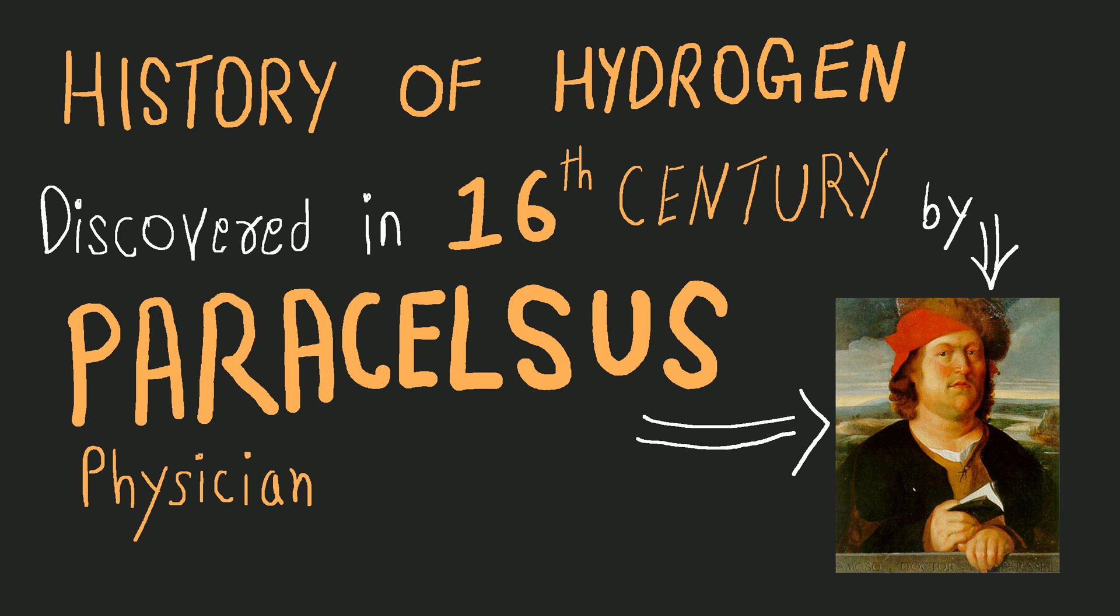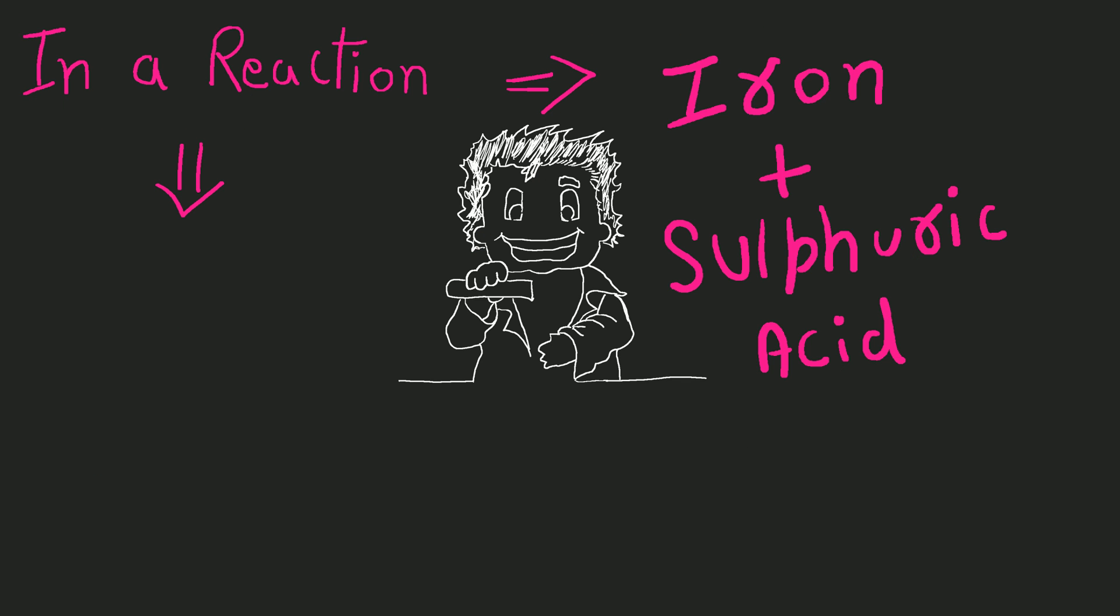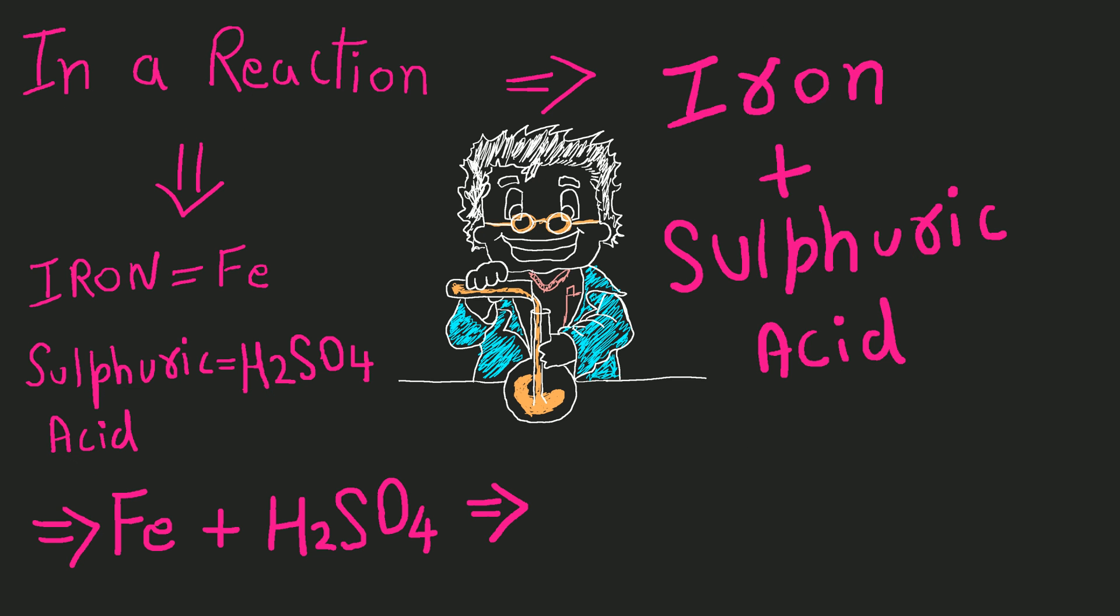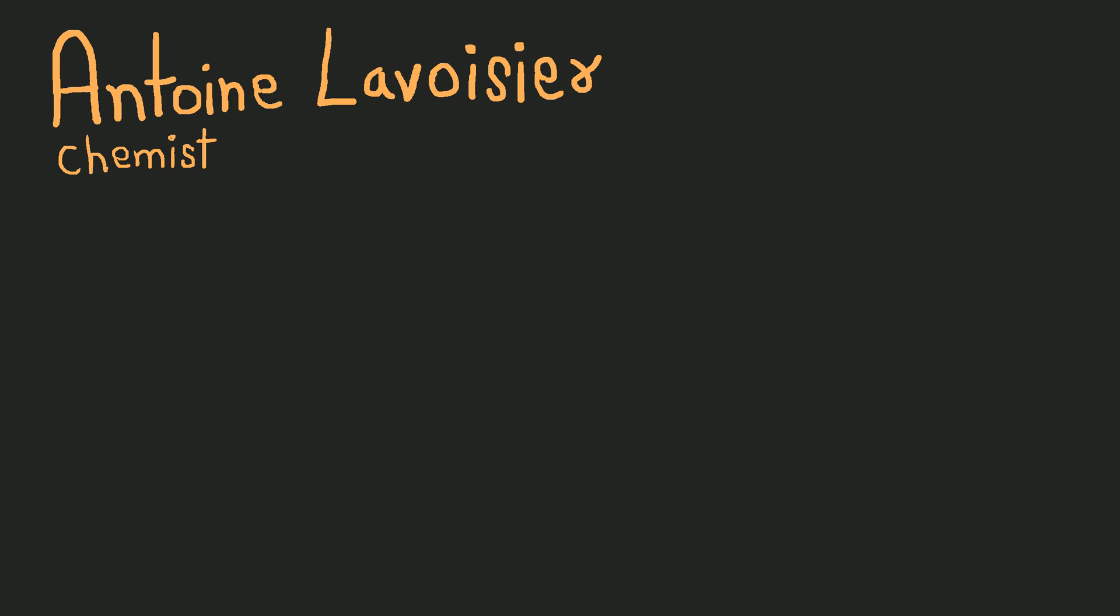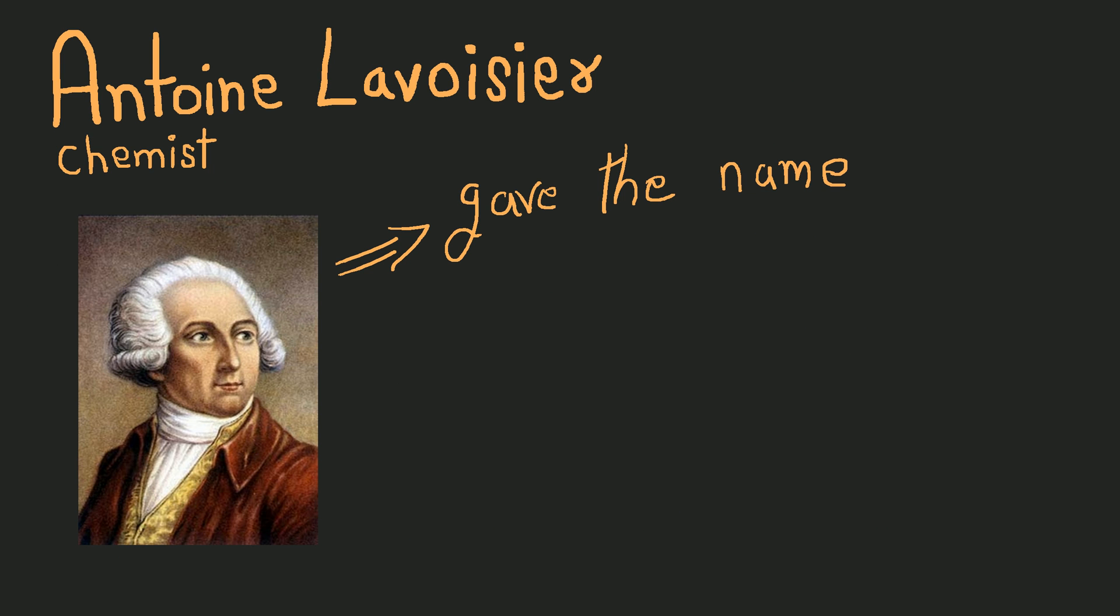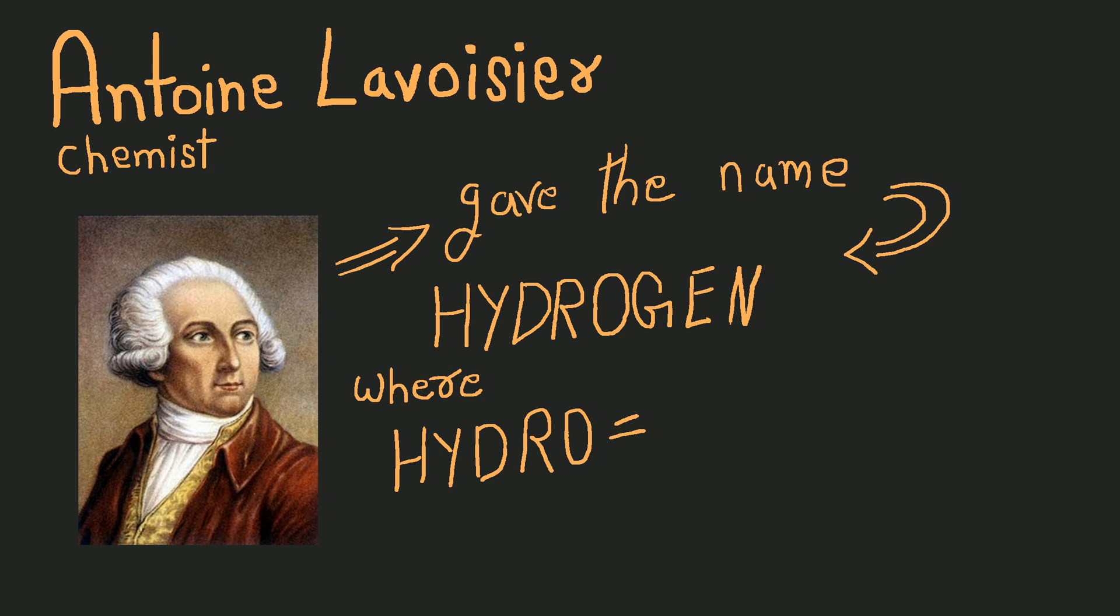It was discovered in the 16th century by Paracelsus, a German physician. He found it in a reaction of iron and sulfuric acid, which gives ferrous sulfate and diatomic hydrogen. Antoine Lavoisier, a French chemist, gave the name hydrogen, where hydro means water and gen means producer.